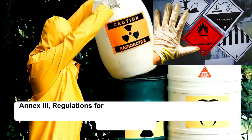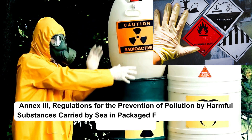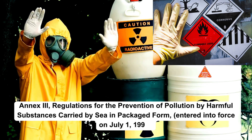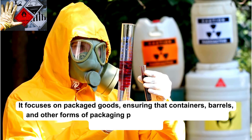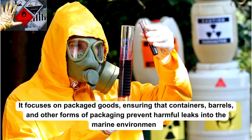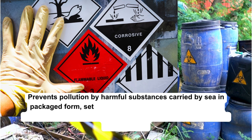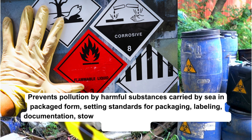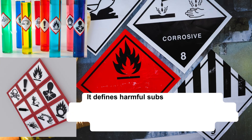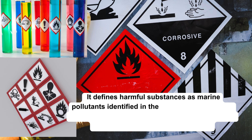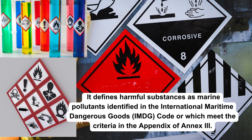Annex 3, Regulations for the Prevention of Pollution by Harmful Substances Carried by Sea in Packaged Form, entered into force on July 1, 1992. It focuses on packaged goods, ensuring that containers, barrels, and other forms of packaging prevent harmful leaks into the marine environment, setting standards for packaging, labeling, documentation, stowage, quantity limitations, exceptions, and notifications. It defines harmful substances as marine pollutants identified in the International Maritime Dangerous Goods, IMDG, code, or that meet the criteria in the appendix of Annex 3.